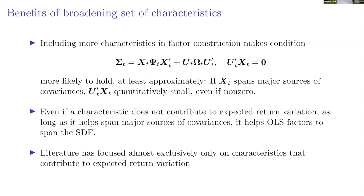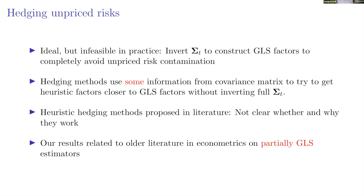But suppose we can't estimate the sigma-inverse matrix. Can we do something? It turns out yes — if we can't directly estimate sigma, we can engage in hedging approaches that indirectly estimate important dimensions of that matrix to remove unpriced risks.